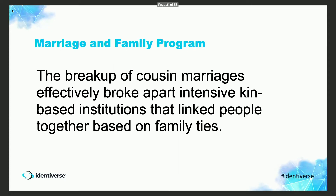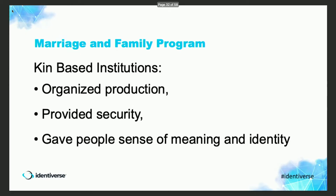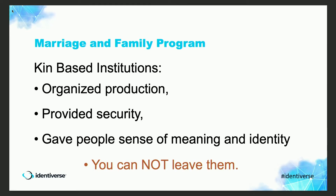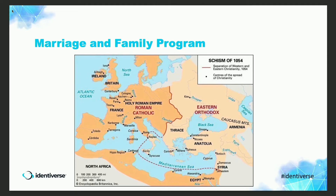This broke up cousin marriages, and over hundreds of years it broke apart intensive kin-based institutions that linked people together based on family ties. Kin-based institutions organized production, provided security, and gave people a sense of meaning and identity — and you could not leave them. By 1000 AD the Roman Catholic Church had expanded significantly, subjecting more and more people to this marriage and family policy, and these kin-based institutions were breaking up.